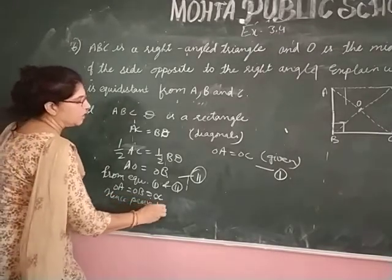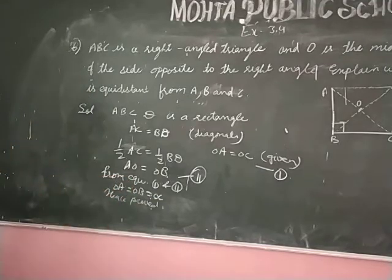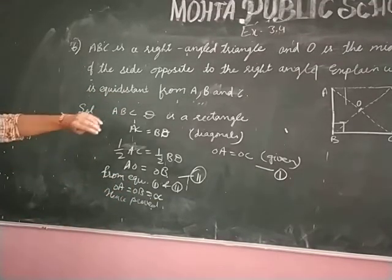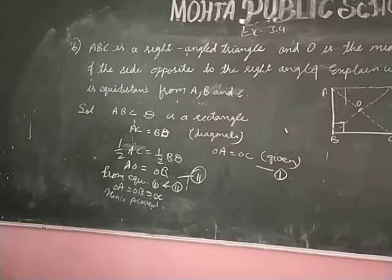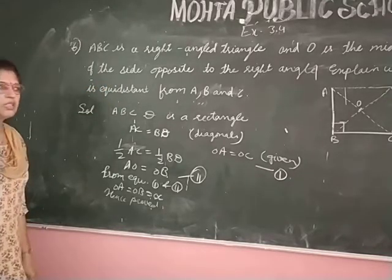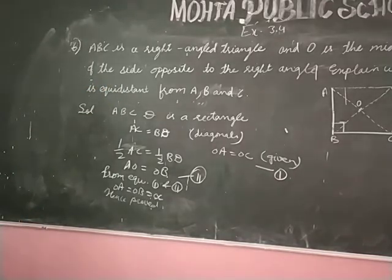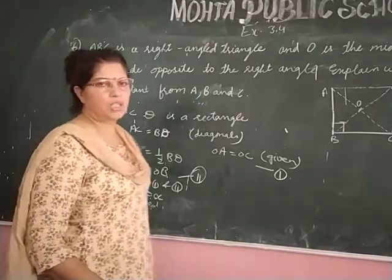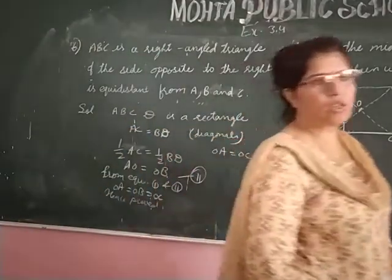This had to be proved. Otherwise you can write A, B and C are equidistance from O. Clear? Now we have completed our chapter 3. Next video, we will solve next chapter. Okay.